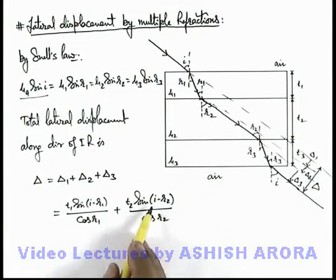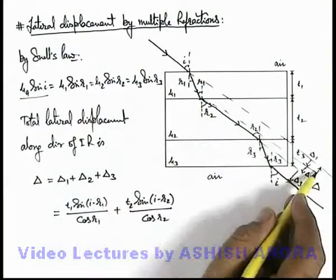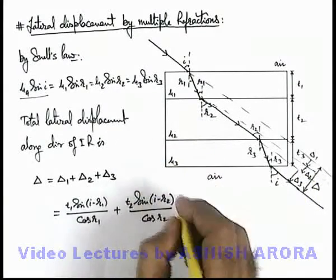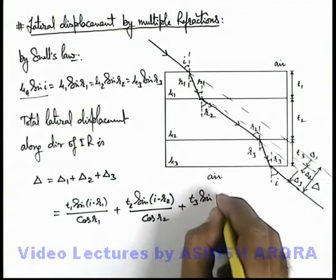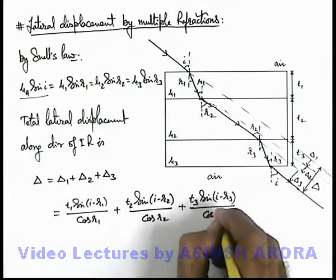Here you must be careful; we need to consider angle of incidence to be i, not r1, because the displacement we are finding out in the direction of i, not in the direction along r1. Similarly, the third displacement will be t3 sin(i - r3) divided by cos r3.